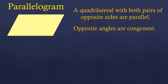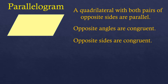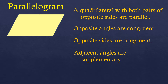Another property is that opposite angles are congruent, meaning they have equal measure. Also, the opposite sides are congruent, meaning they have the same length. Adjacent angles are supplementary, meaning if you add them, they sum up to 180 degrees.